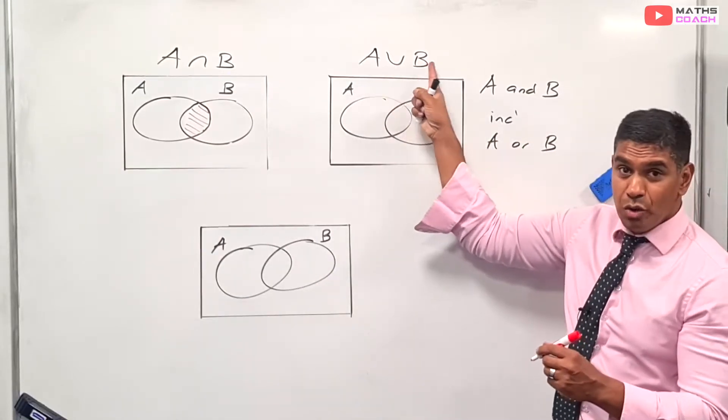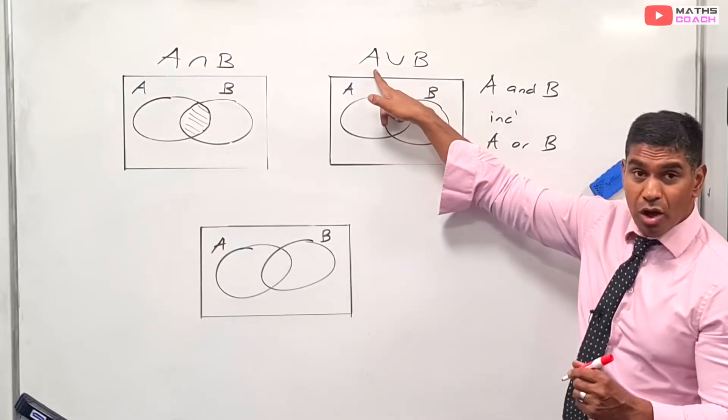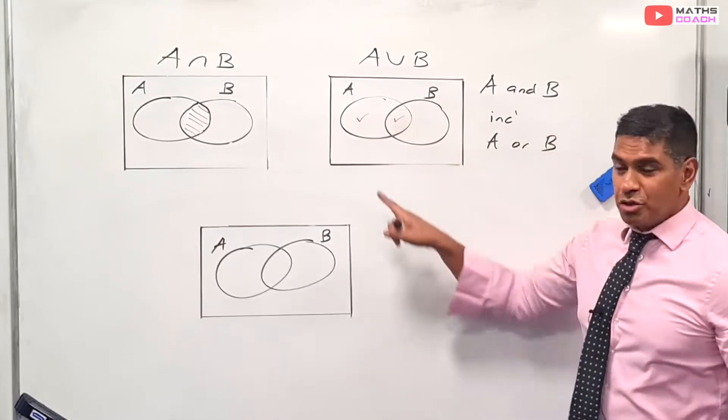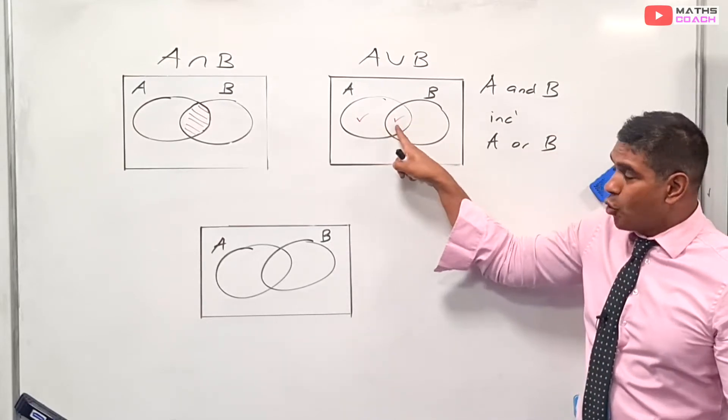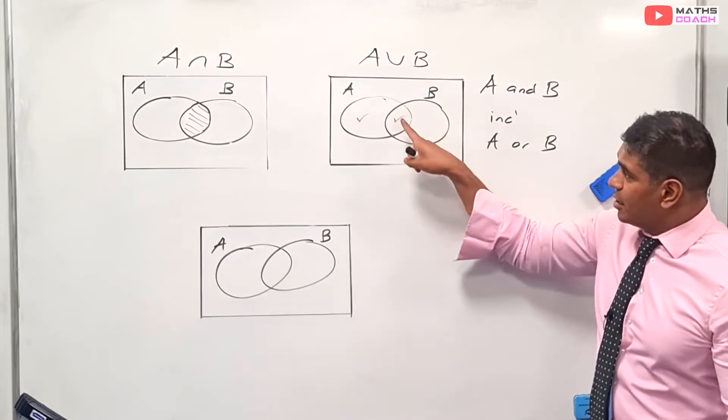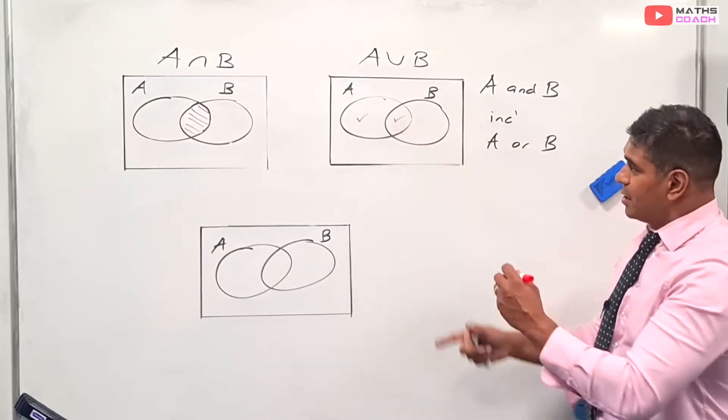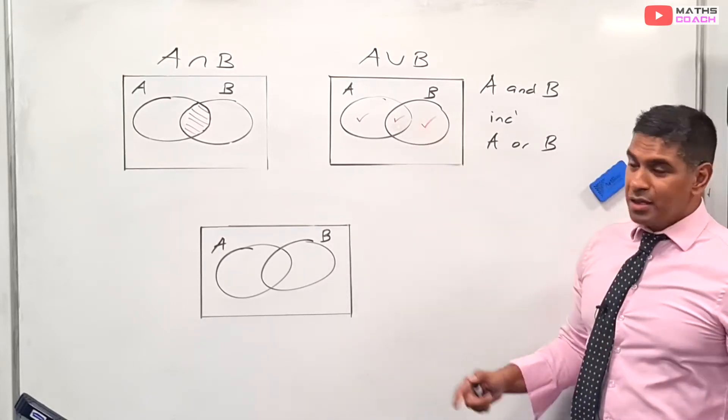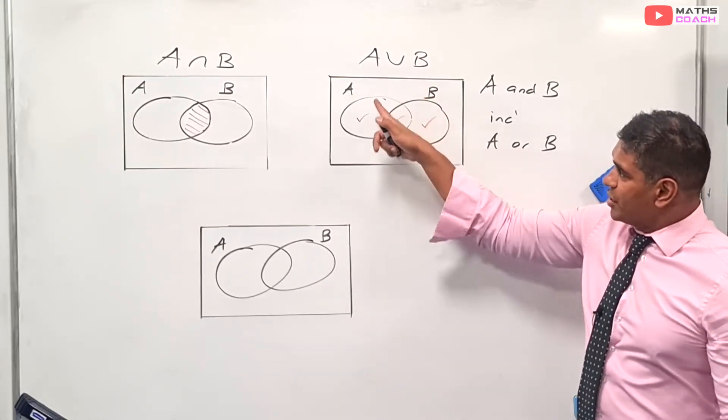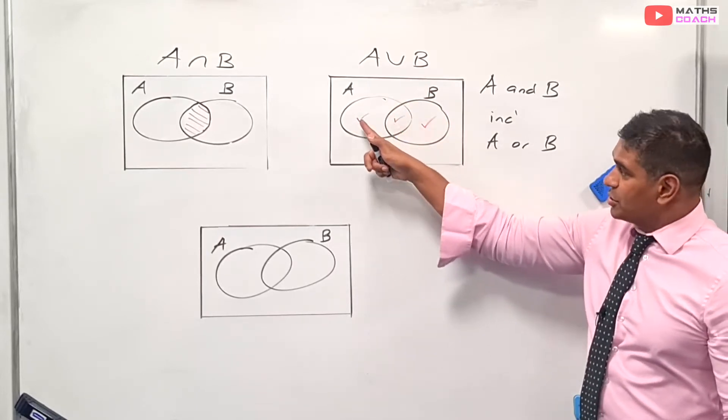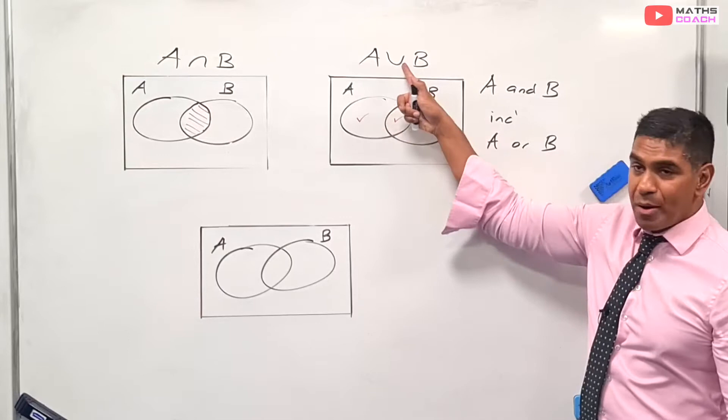So when you see A∪B, this means, in words, all of A. So you can see I've ticked all of A, whether you're in B or not. B means all of B. Well, I already ticked that part of B, so the only other bit I need to tick is that. So all together, this means all of A, all of B, and including. So these three ticks here represent A∪B.